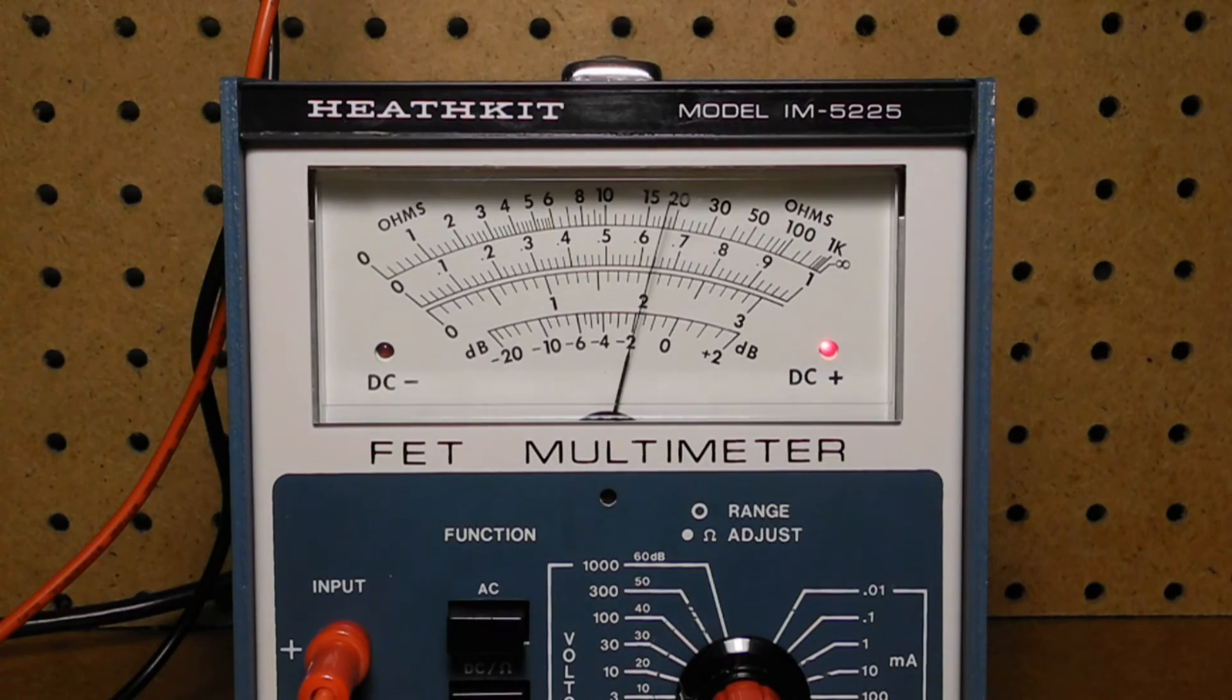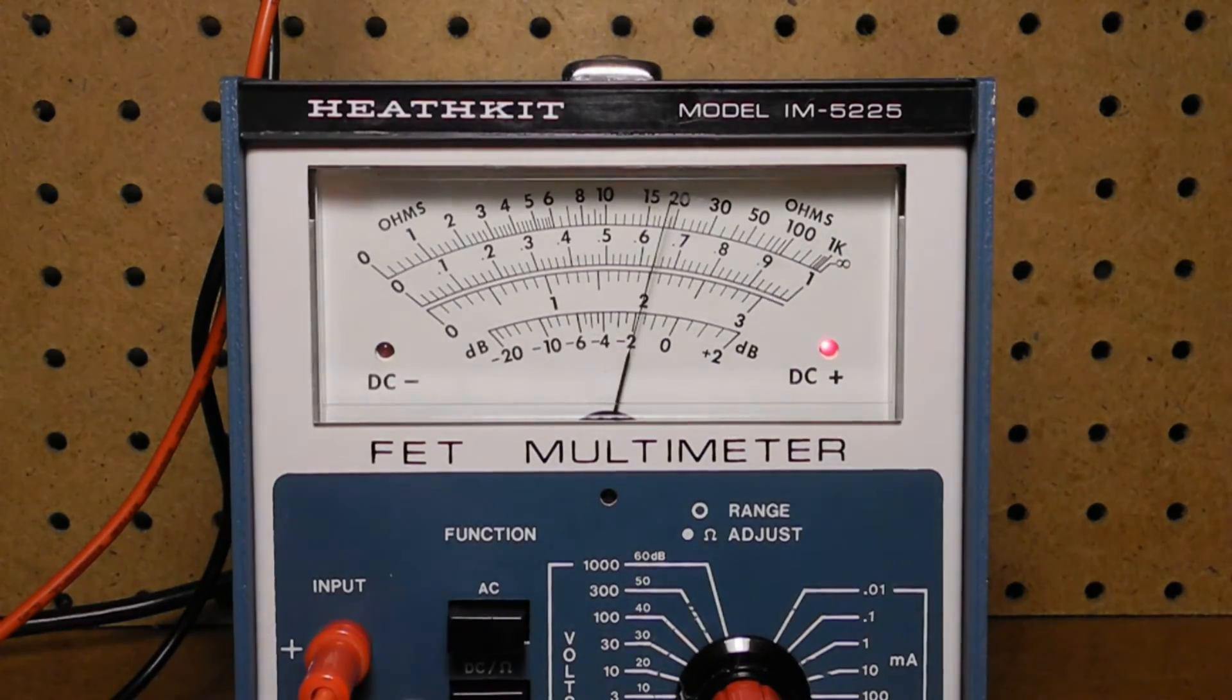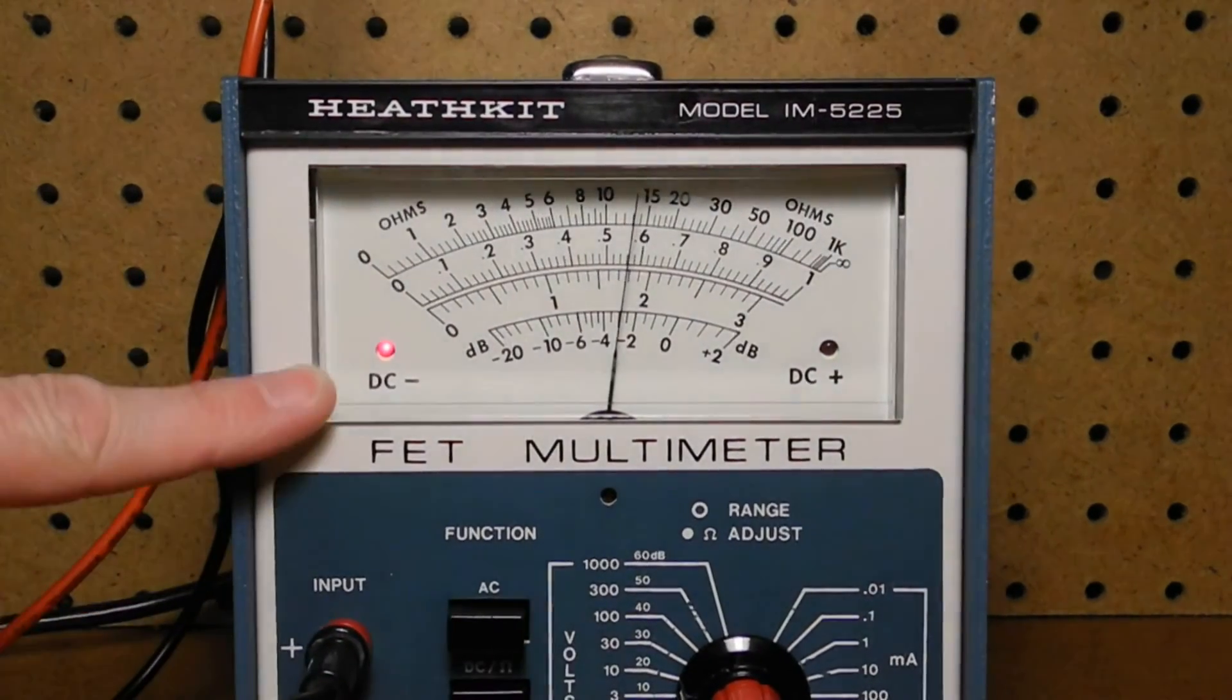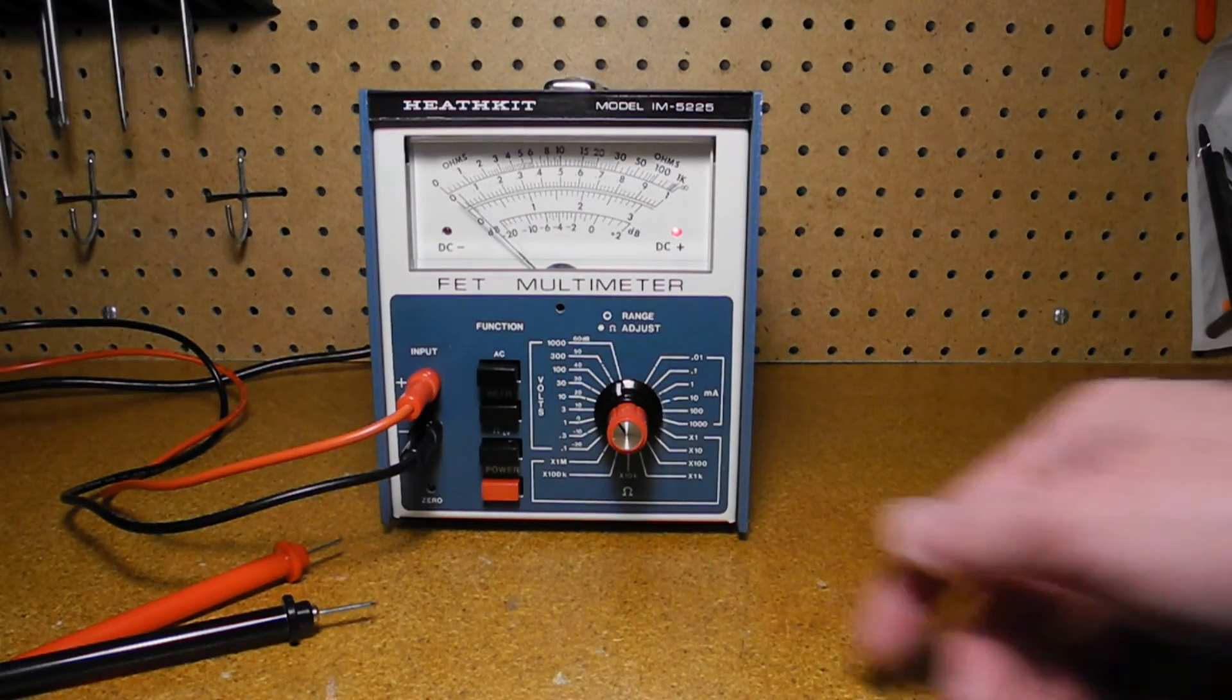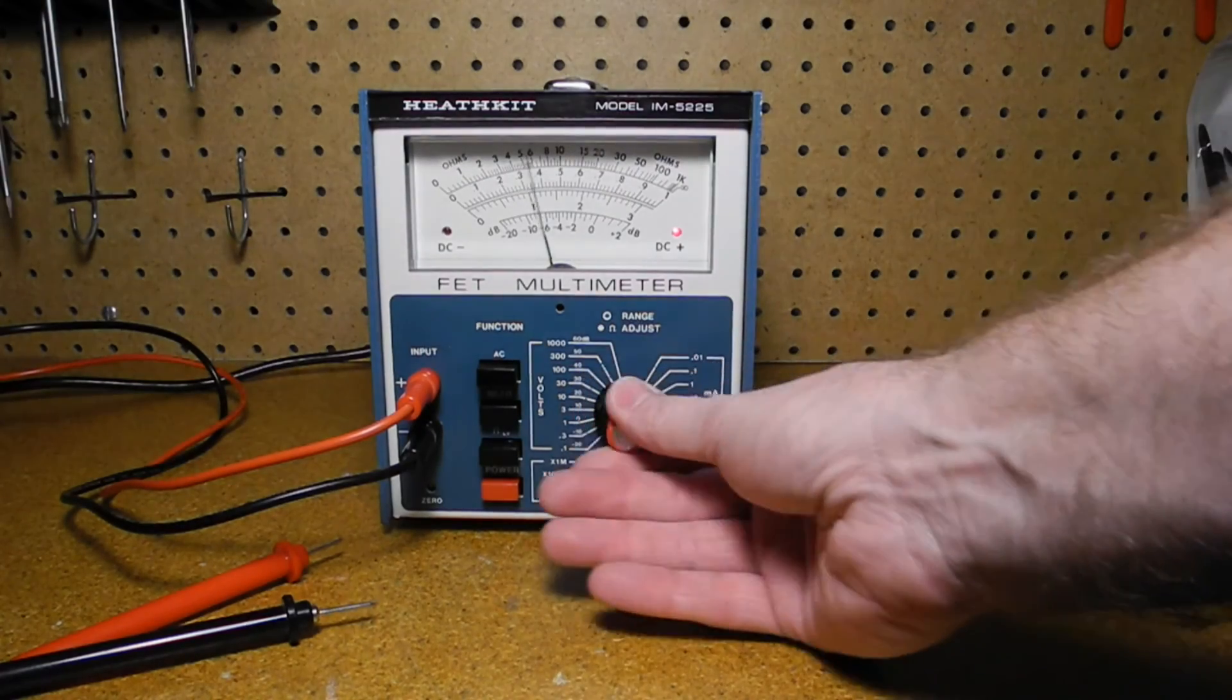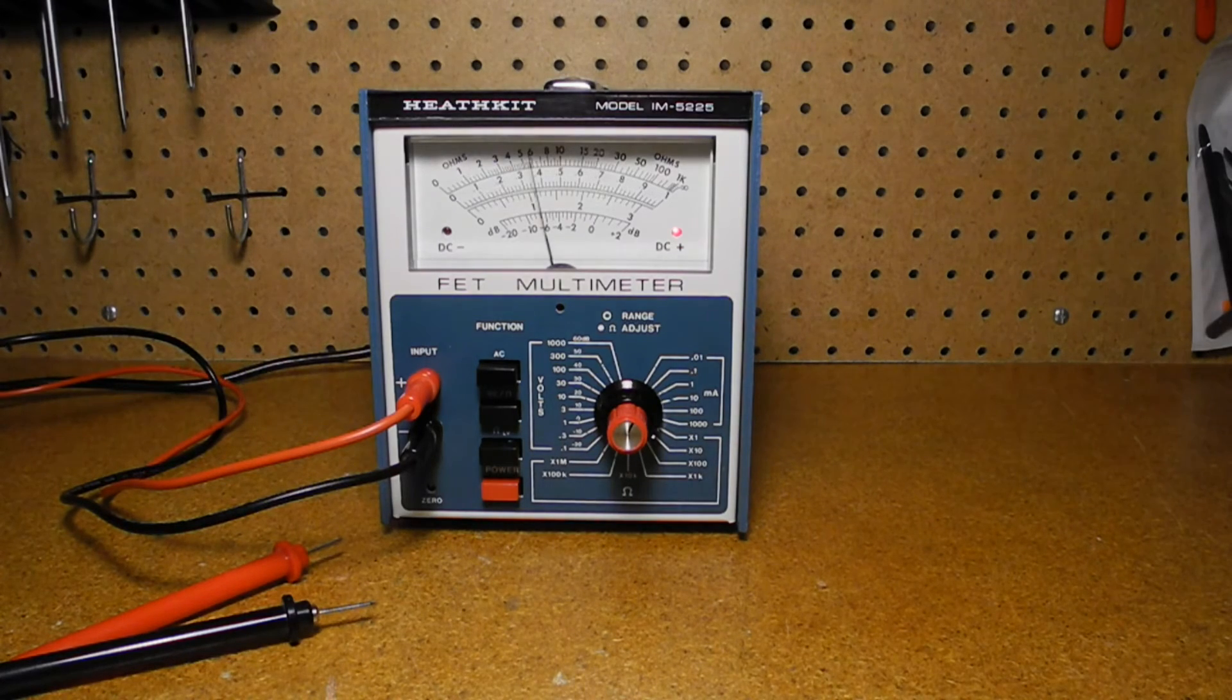For DC measurements, the polarity is indicated by the red LEDs on either side of the meter. For resistance measurements, set a suitable range. Then adjust the ohms adjust knob for an infinite ohms reading on the meter. I'm not actually able to adjust for a full scale reading. I'll explain why later.